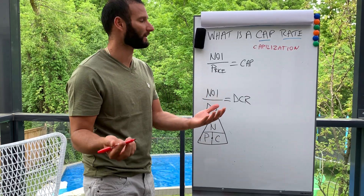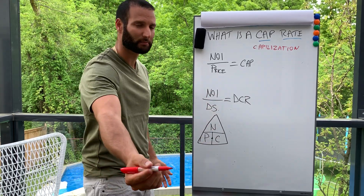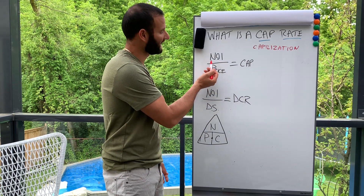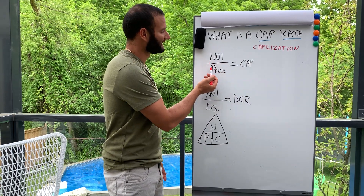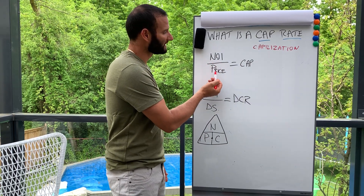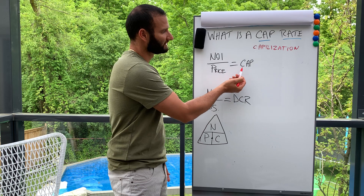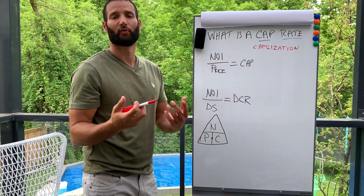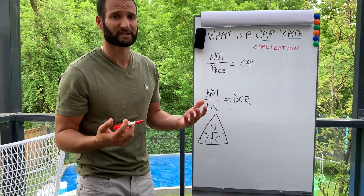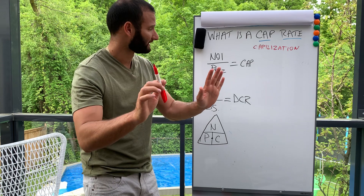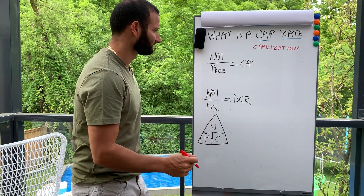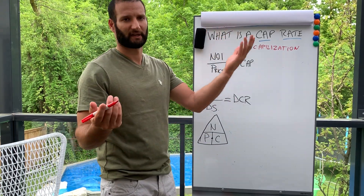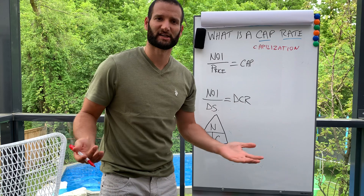How do you figure out a cap rate? Very simple: the Net Operating Income (NOI) divided by the price equals your cap rate. Your cap rate is always a ratio or a percentage.